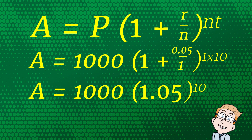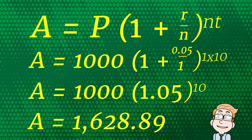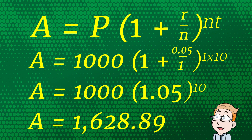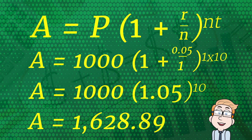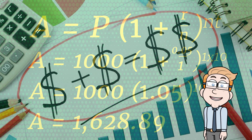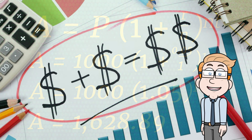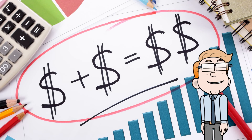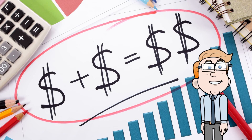When you plug in those numbers, after 10 years your investment grows to approximately $1,628.89 — that's an impressive $628.89 more than your initial sum. The beauty of compound interest is that each year you're earning interest not just on your original $1,000, but on all the accumulated interest from previous years.